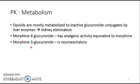If an opioid has active metabolites, you might not want to give a prolonged infusion. If you do give a prolonged infusion, bear in mind that the half-life will be longer — it becomes a context-sensitive half-life, which prolongs with the duration of the infusion.